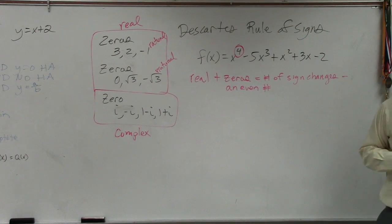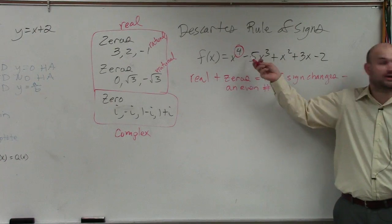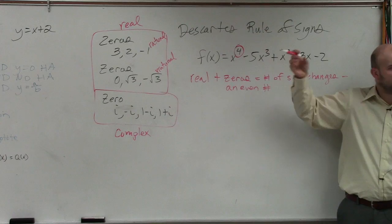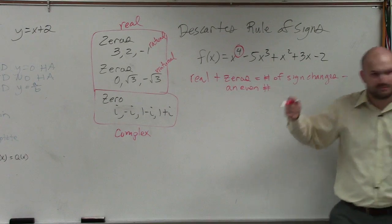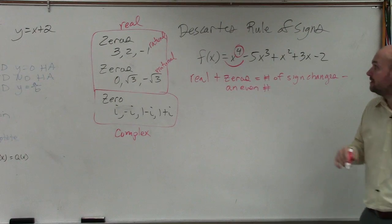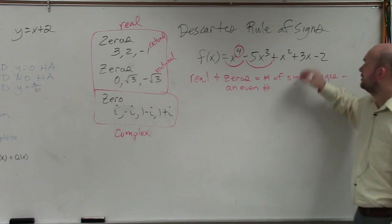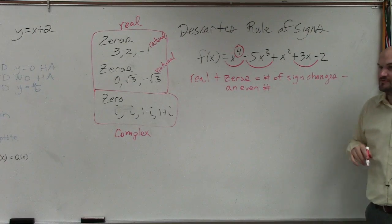It kind of looks confusing. It's much easier just to do. So we start with positive x to the fourth. Then we go to negative x cubed. Do you guys see how I went from positive to negative? So I can have one positive real zero. Then I go from negative to positive. I can now have two. And then over here, I have another positive change.